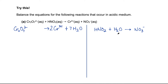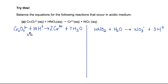Next, balance hydrogen by adding H⁺ — that means we have 14 H⁺ on the reduction side, and 3 H⁺ on the oxidation side. Next we check that the charges are the same on both sides. On the left I have minus 2 plus 14, which is plus 12. On the right I have 2 times 3, which is plus 6. They are not the same, so I need to add 6 electrons to bring the charge down to plus 6.